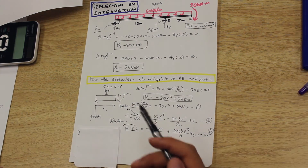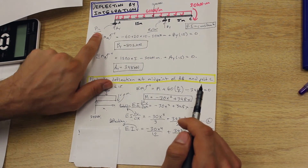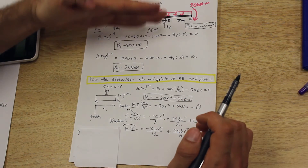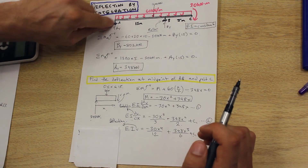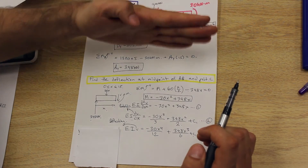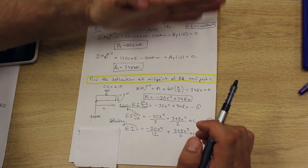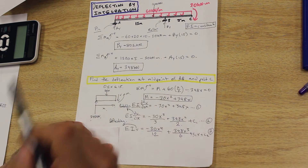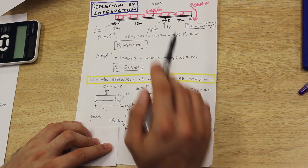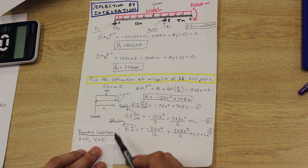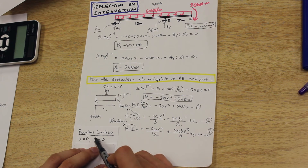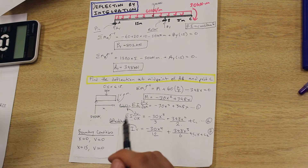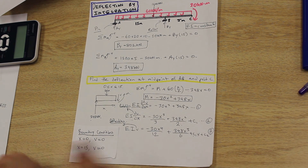Boundary conditions are known points on the beam where we can ascertain certain values about deflection or rotation. On this beam, at points A and B, we have a pin and a roller. At the pin and the roller, the beam cannot move vertically — that is, there's no deflection. Supports A and B do not restrict rotation, but the beam cannot deflect up or down. So we can say deflection V = 0 at point A and V = 0 at point B. The boundary conditions are: at X = 0, V = 0; and at X = 15, V = 0. Using these two conditions, we can solve for C₁ and C₂.